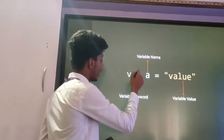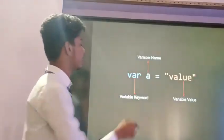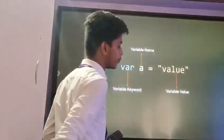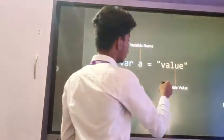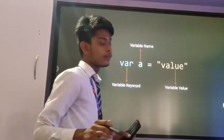Here var - var is the variable keyword. And a - a is the variable name. And value inside semicolon is the variable value or variable data.